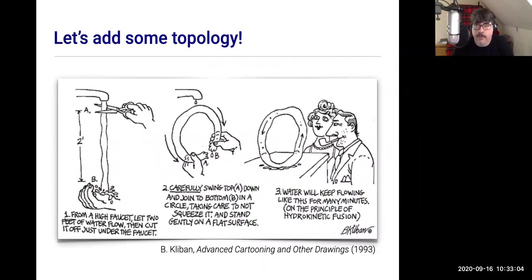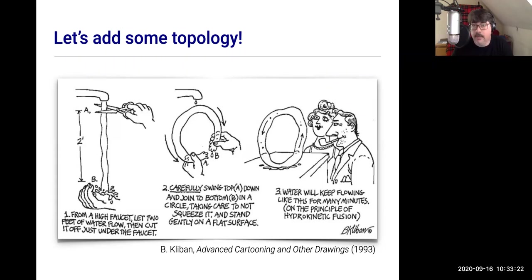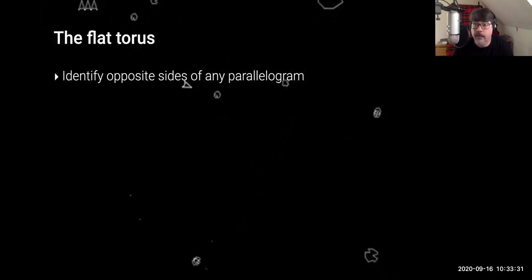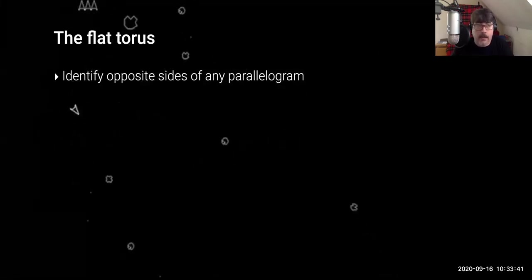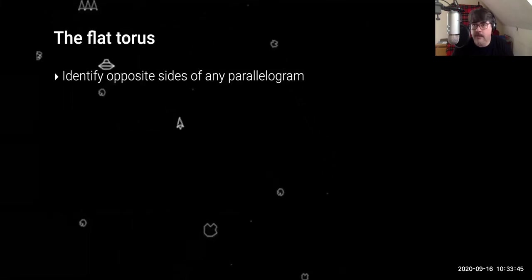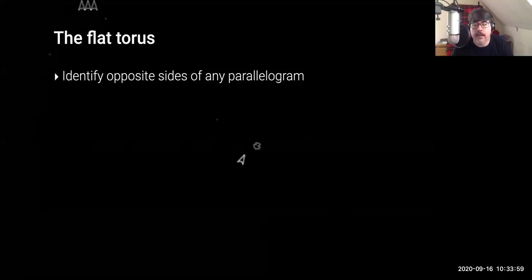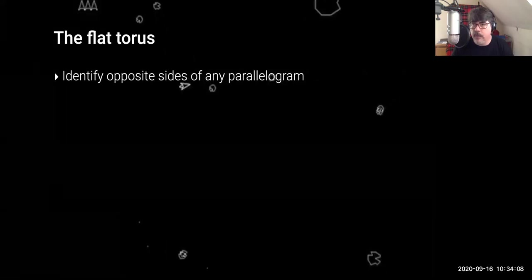If you've heard me give a talk any time in the last 15 years, you know I'm generally not very happy leaving things in the plane. I tend to play around a lot with graphs on surfaces. I'm going to add a little topology to both Tutte's and Maxwell's results, using perhaps the simplest non-planar topological space: the flat torus. Normally you think of the torus as the surface of a donut, but I think it's more enlightening to think of it as the space you get when you identify opposite sides of a parallelogram — like the Asteroids video game space, where an asteroid falling off the right-hand side comes back on the left.